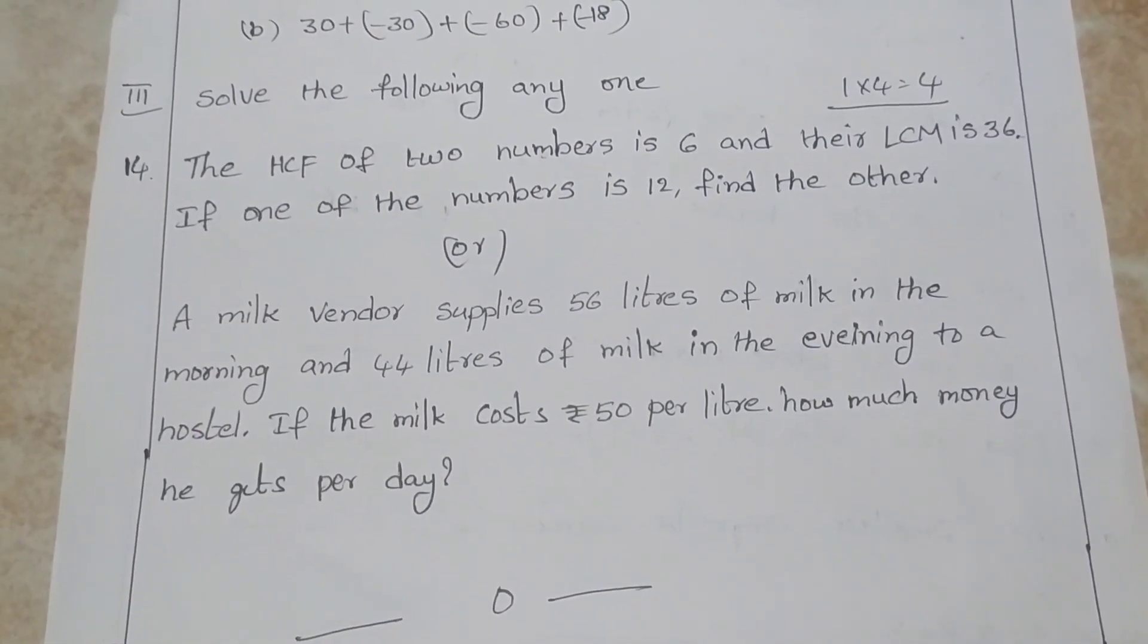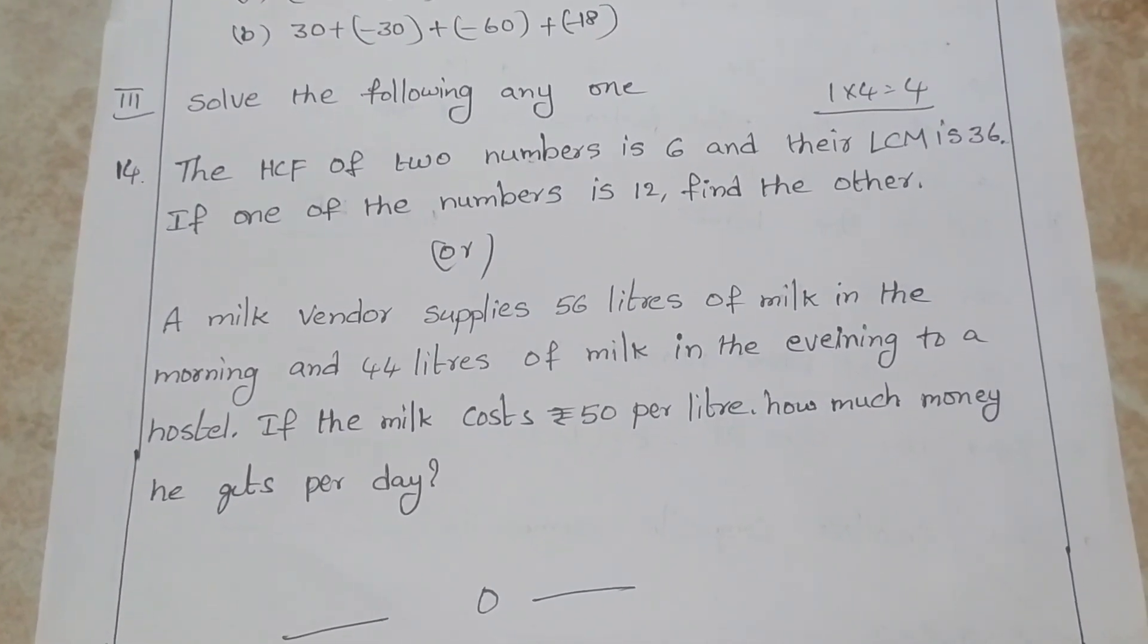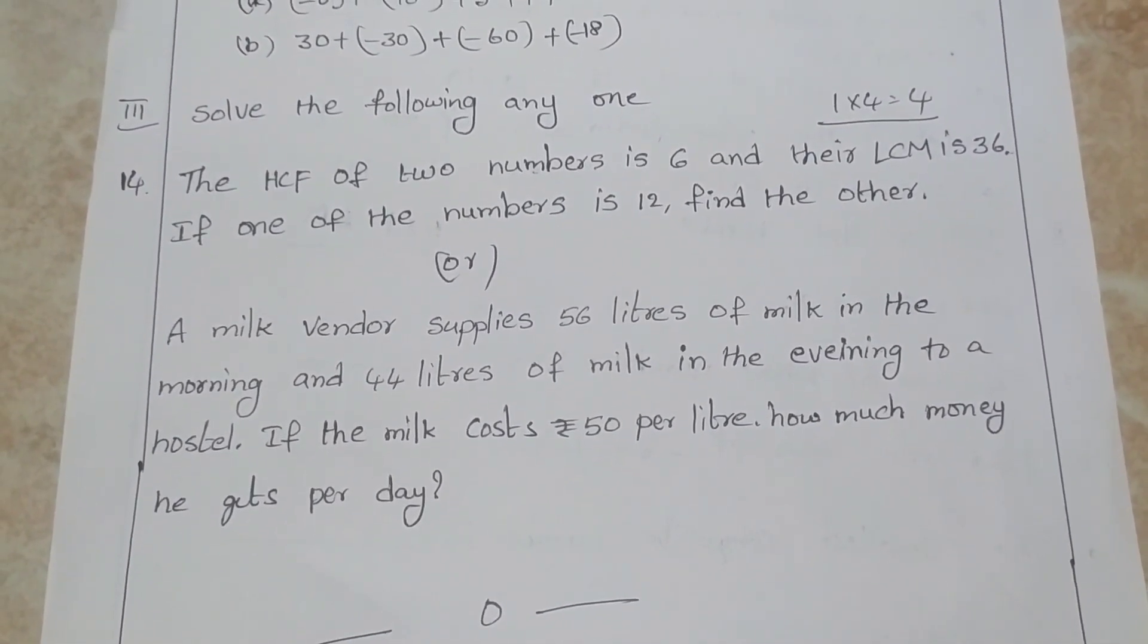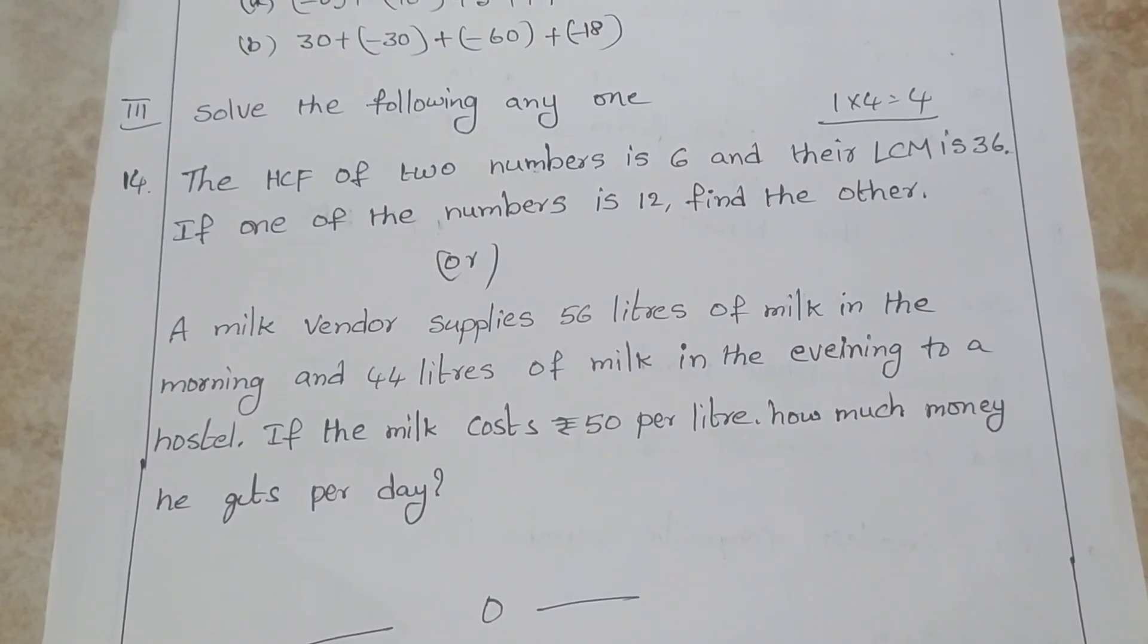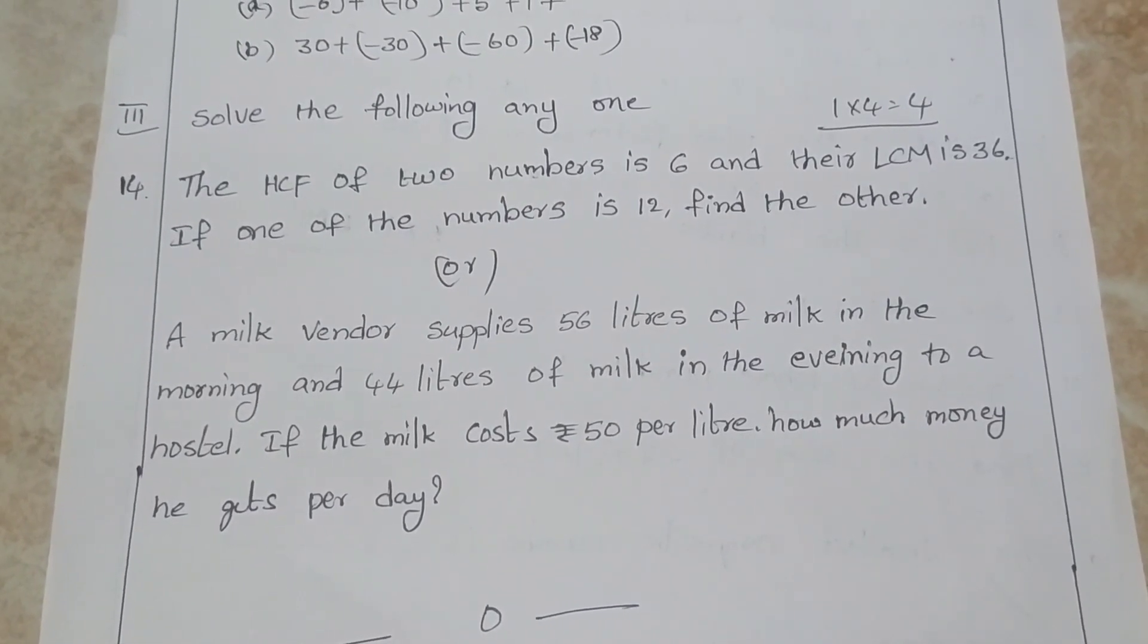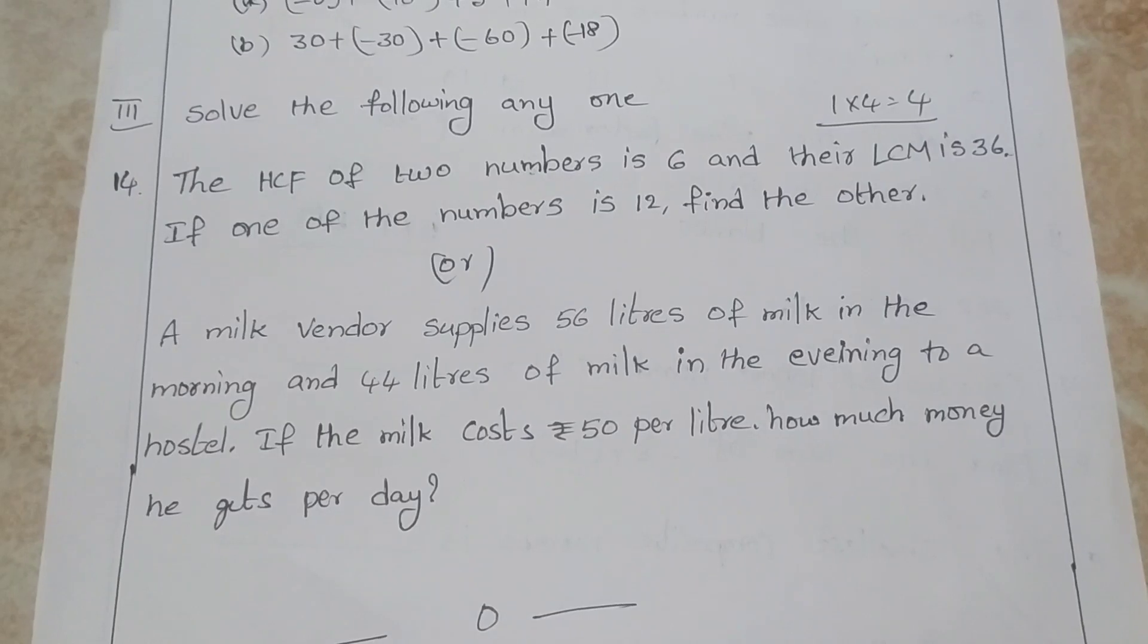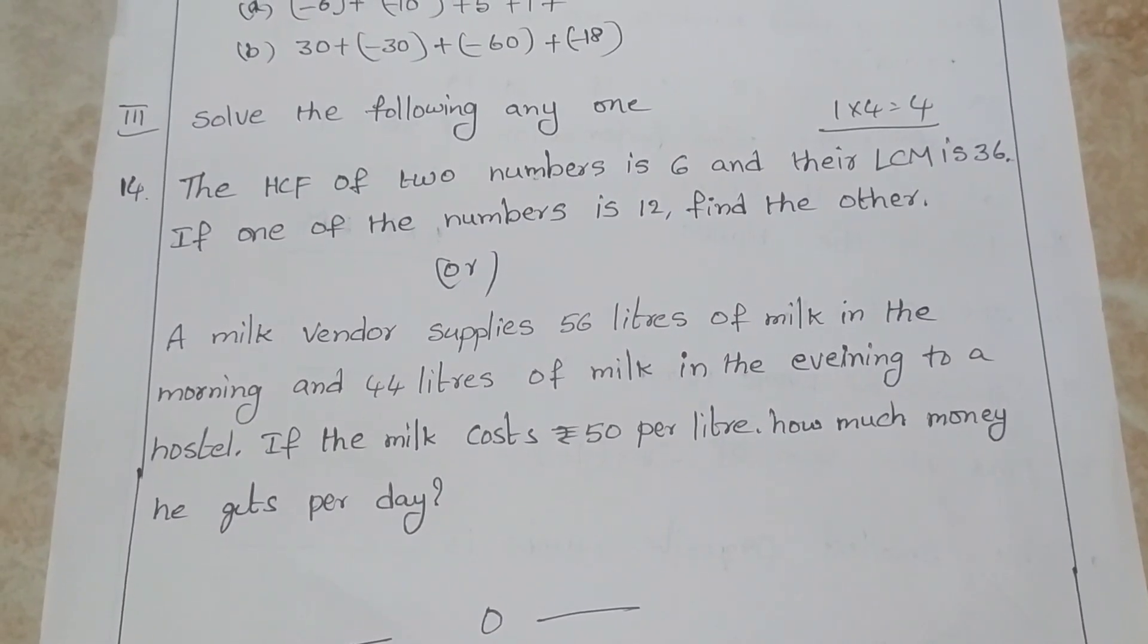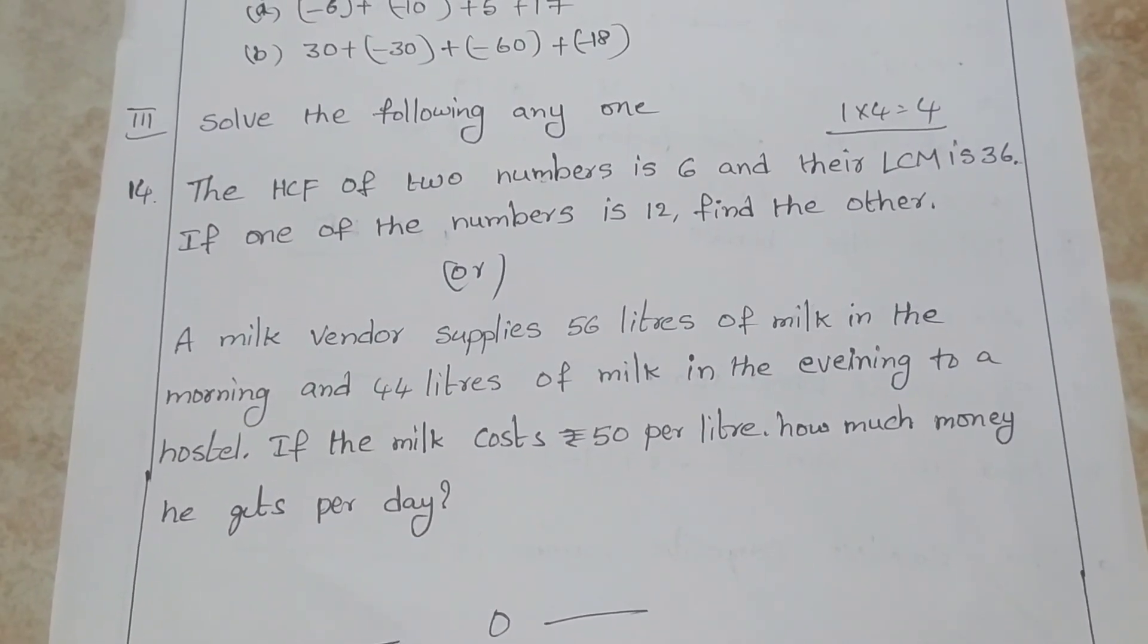A milk vendor supplies 56 liters of milk in the morning and 44 liters of milk in the evening. If the milk costs 20 rupees per liter, how much money he gets per day?